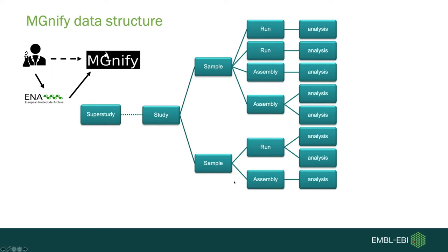This is what the MGnify data structure looks like. We inherit a lot of this from ENA. The first portion of this hierarchy is the super study — there aren't many, and these are very big projects containing multiple studies. The next step is the study, which is the project containing all the other aspects: samples, runs, assemblies, and analyses.